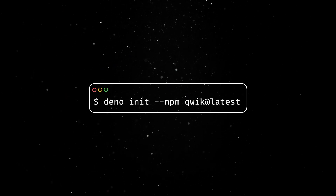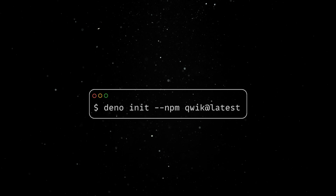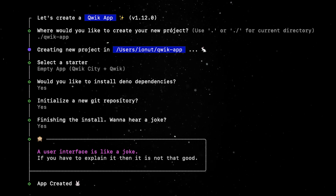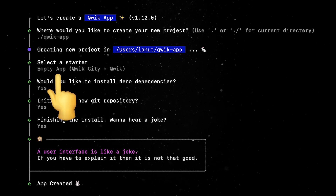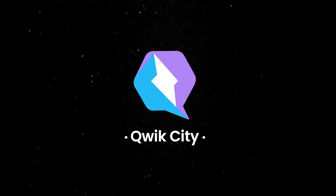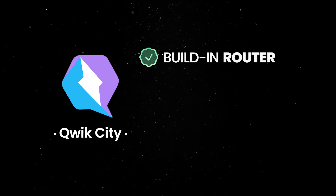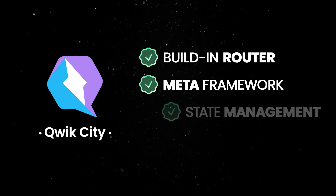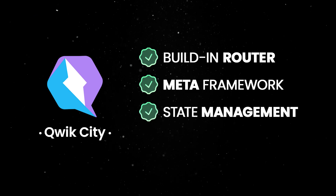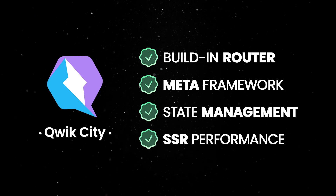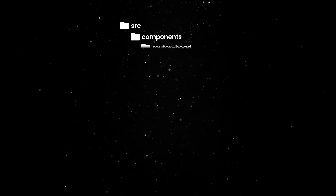Let's start by creating a new project using the Dino init command. This will run you through the setup process for Qwik and QwikCity. Let's choose the simplest empty app deployment with NPM dependencies. QwikCity is Qwik's built-in router and meta framework designed to handle complex routing and state management while maintaining the framework's blazing-fast performance. With the setup complete, we'll end up with this project structure.